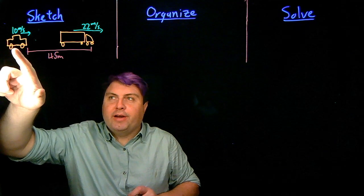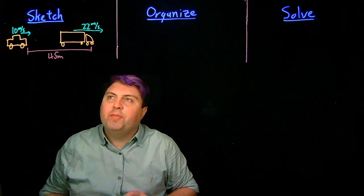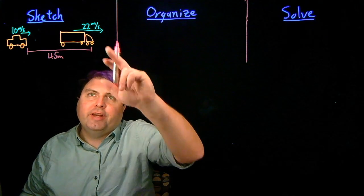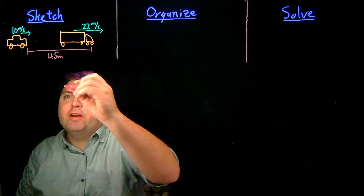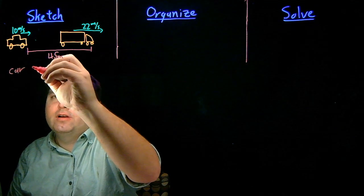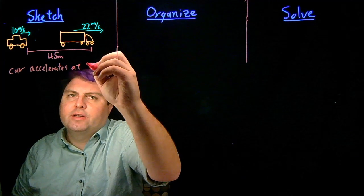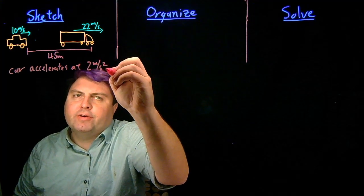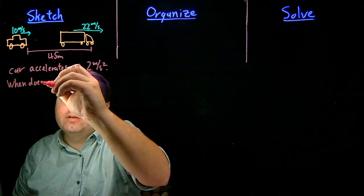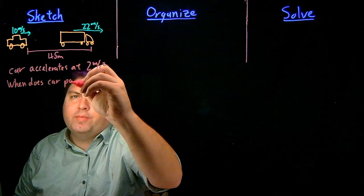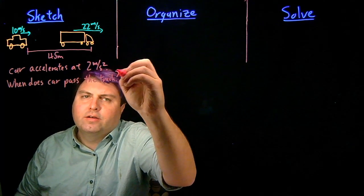We have a car entering the highway and it's 45 meters behind a truck. The car starts at 10 meters per second. The truck is going a steady 22 meters per second, not changing it. And we're told that the car accelerates at 2 meters per second squared. We want to ask, when does the car pass the truck?